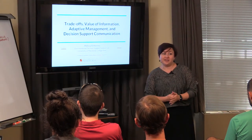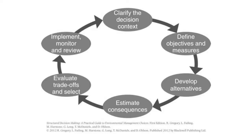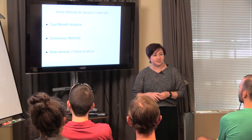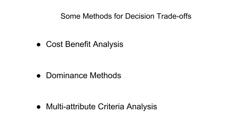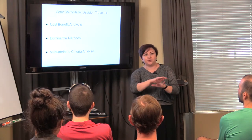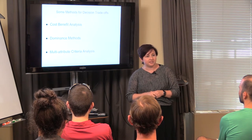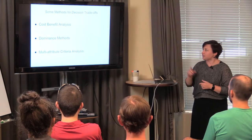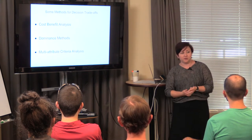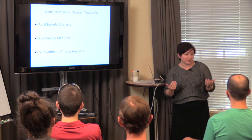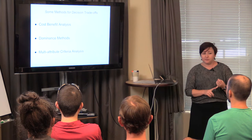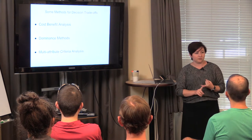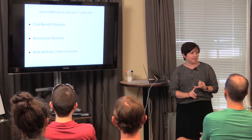We're going to go whirlwind through some examples with this PROACT approach. We're going to talk about three different methods to assess decision trade-offs: cost-benefit analysis, dominance methods, and multi-attribute criteria analysis or multi-attribute utility analysis. We won't get into a lot of the details, but there's a couple of references at the end. I'm going to introduce a concept, give you an example from my own research, and introduce the idea of value of information. We'll also talk at the end about how we think about communicating these forecasts effectively.